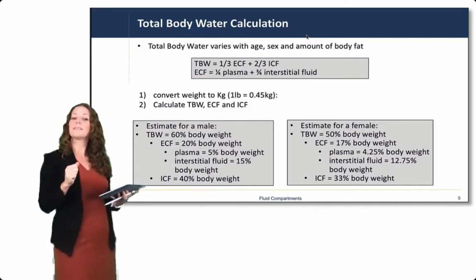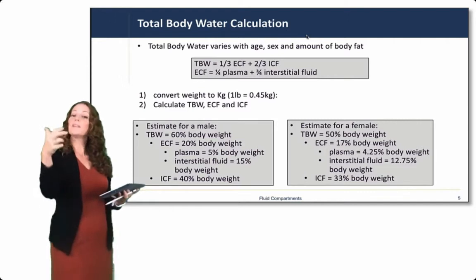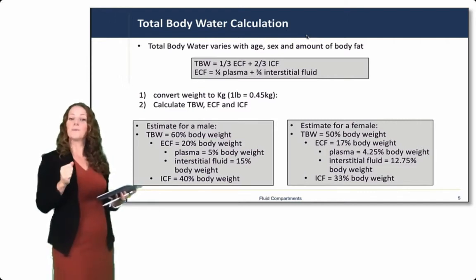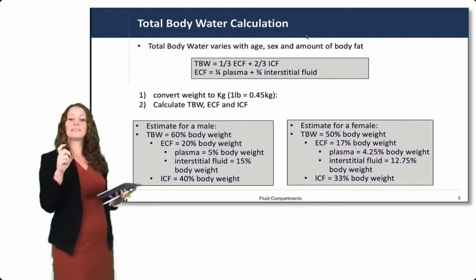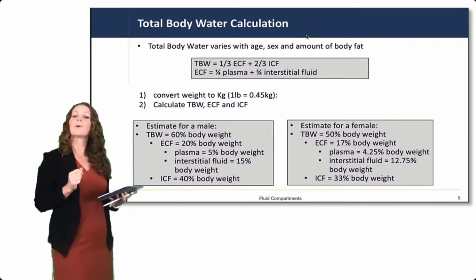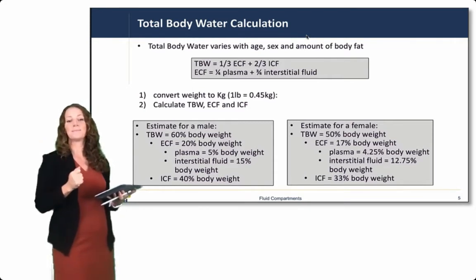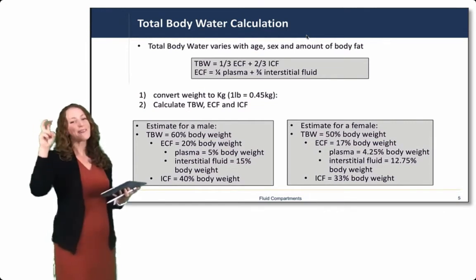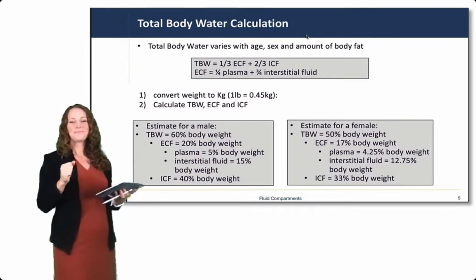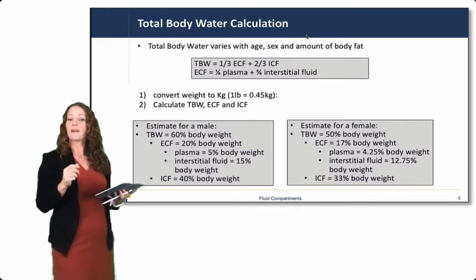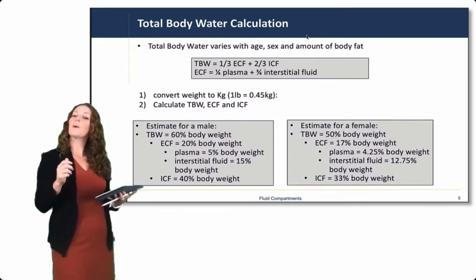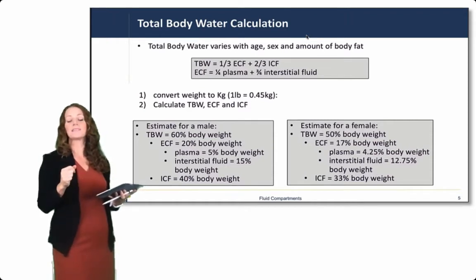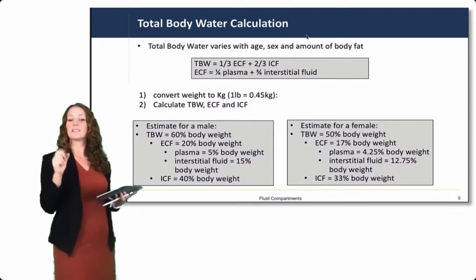An easy way to remember this is 60, 20, 40. So if you're given the body weight for an individual, you can quickly estimate ECF as 20% and ICF as 40% of that body weight in kilograms. That's an estimate for your average male. Females have a slightly higher percent body fat, so for females the total body water is 50% of body weight, and then you can use the same logic of calculations to get the individual percentages.